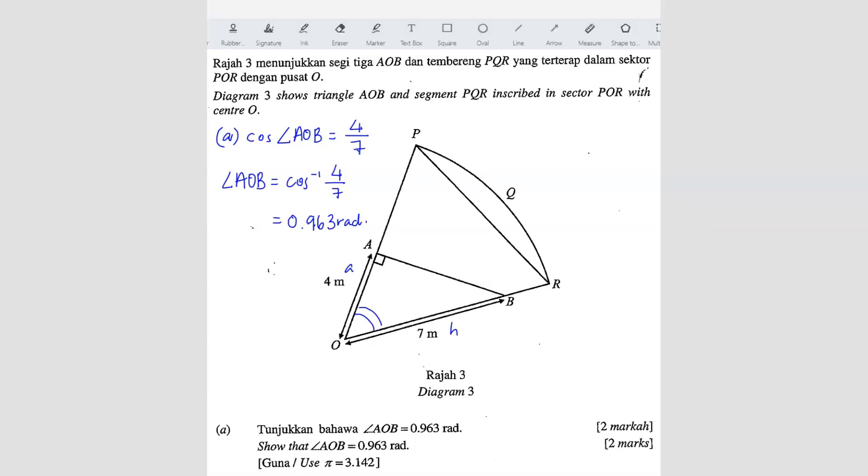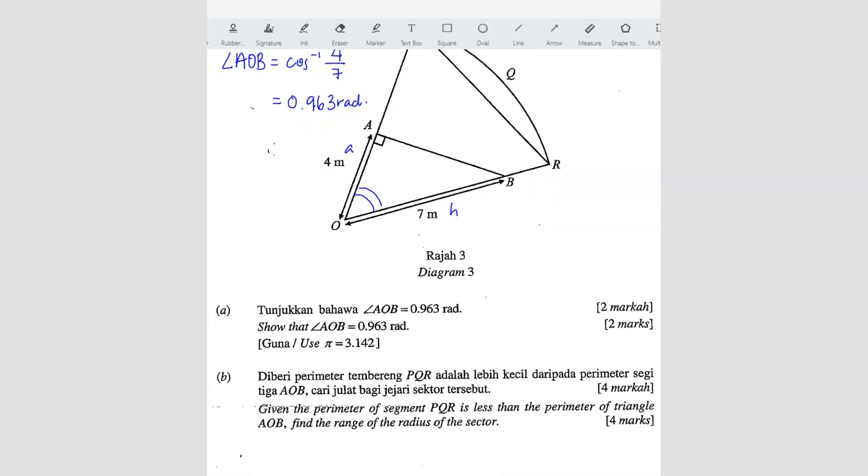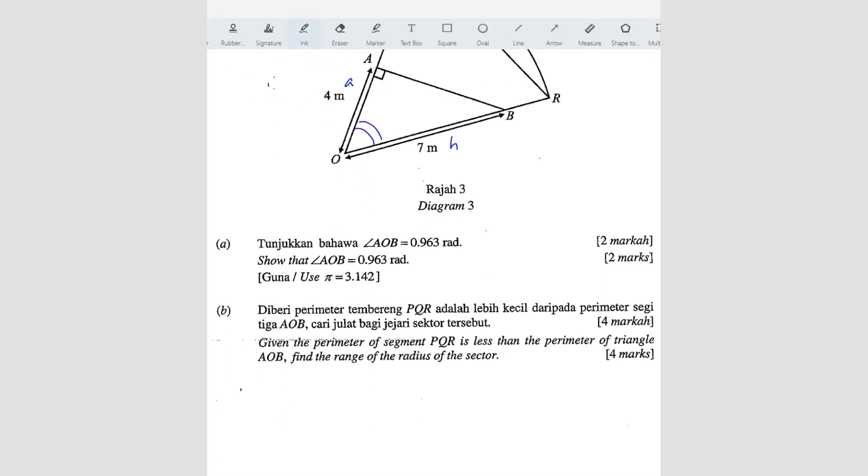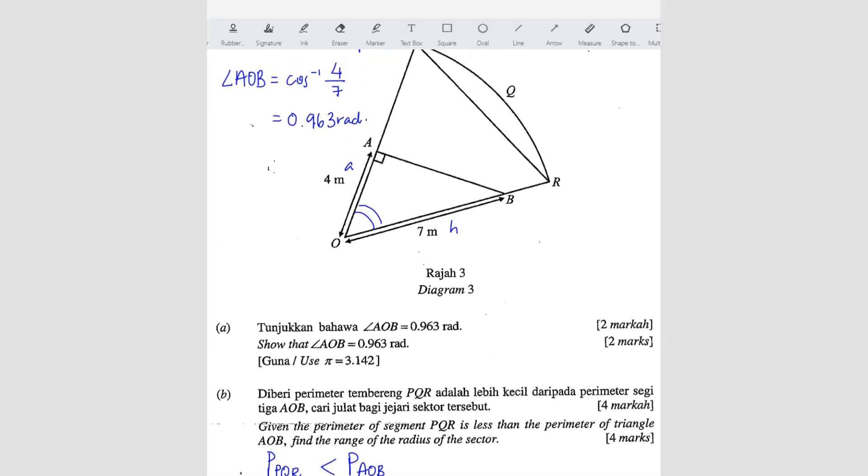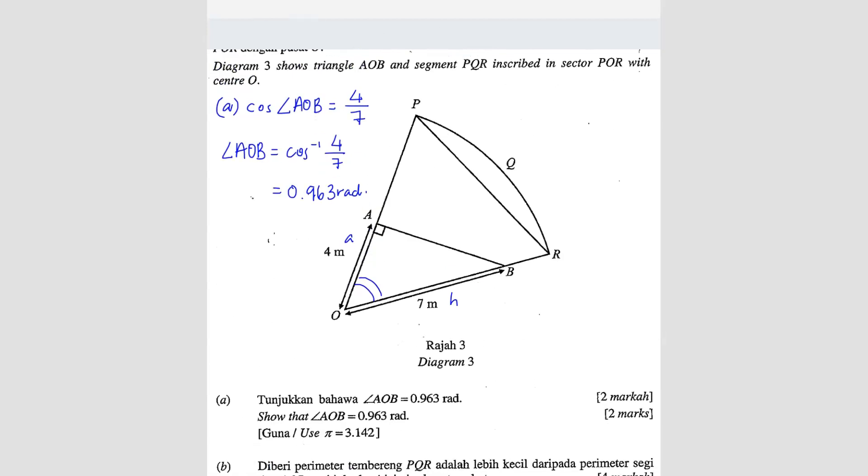Now question B. Given that perimeter of segment PQR is less than perimeter of triangle AOB, find the range of radius of the sector. So PQR is this part here. We can find this length because this length is basically R theta, right? So the arc PQR is equivalent to R times theta, which is 0.963R.